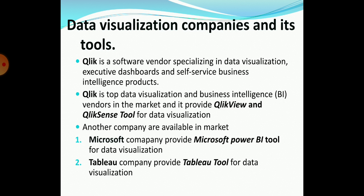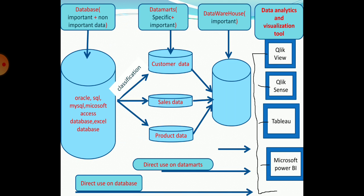For better understanding, we will see the architecture diagram. On the top of the diagram, we will see a database — a database which contains both important and non-important data. Then we have the data mart and data warehouse.